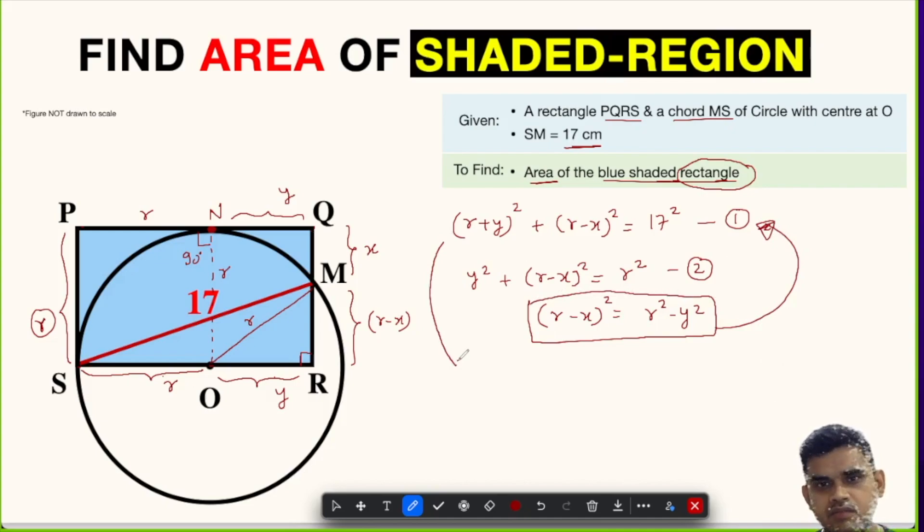This is the value of (R - X)² which we can substitute in equation 1. So equation 1 becomes (R + Y)² and in place of (R - X)² we can have this value, that is, plus R² - Y² = 17². 17² is 289.